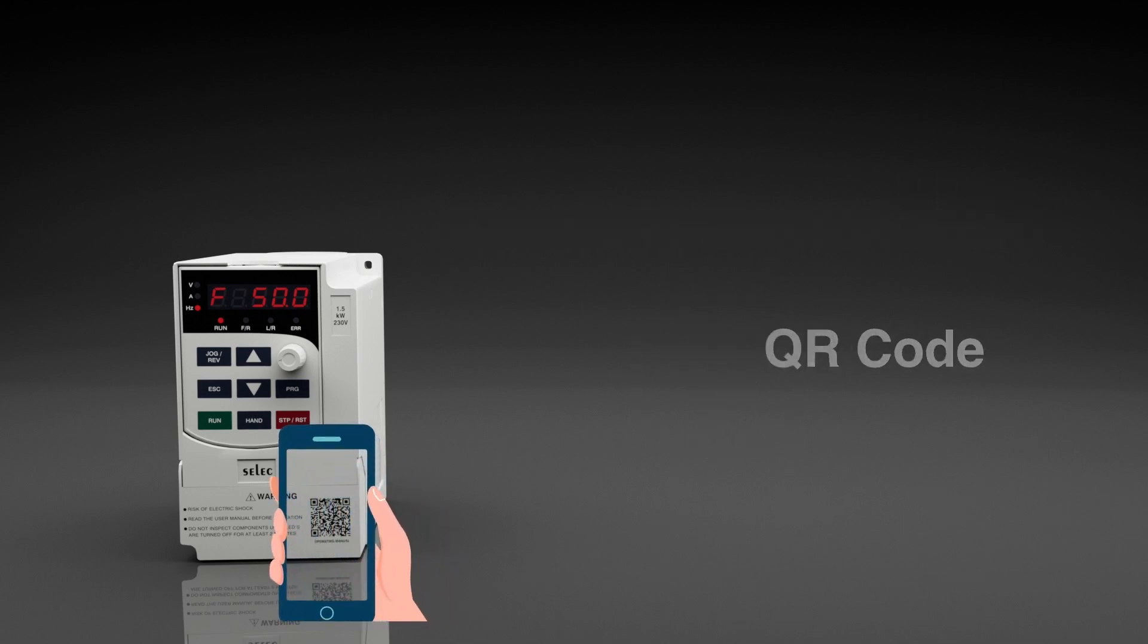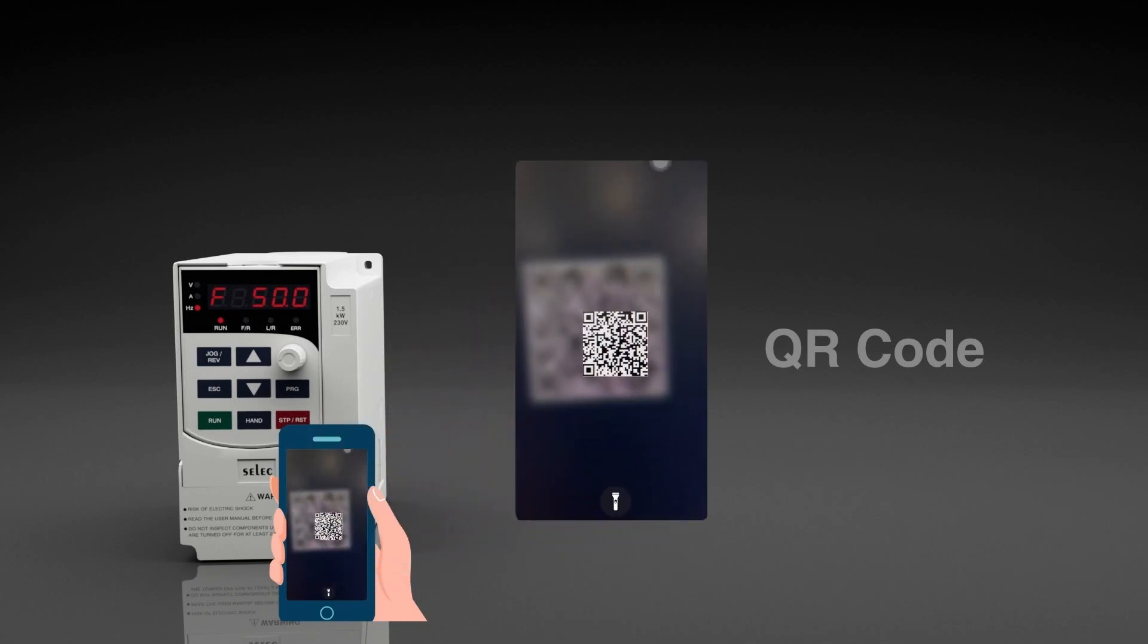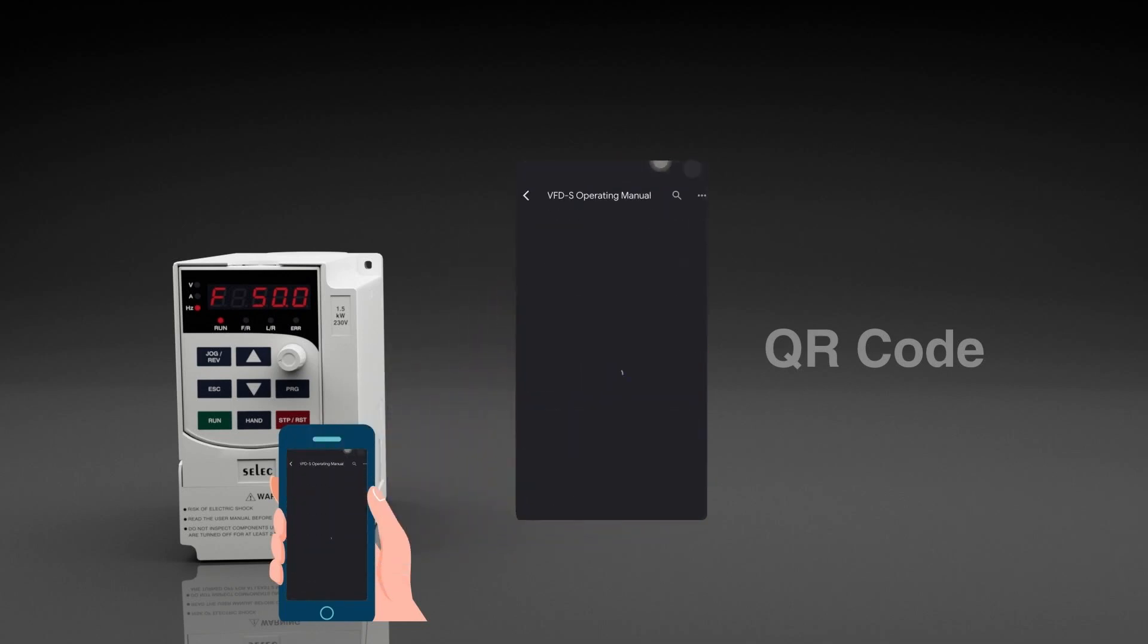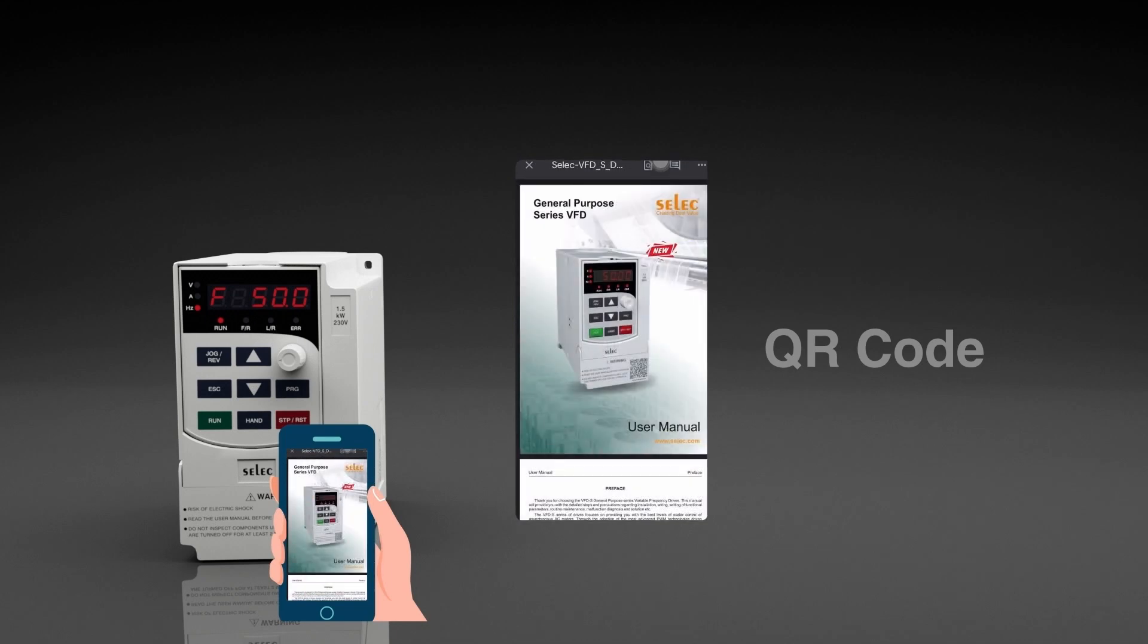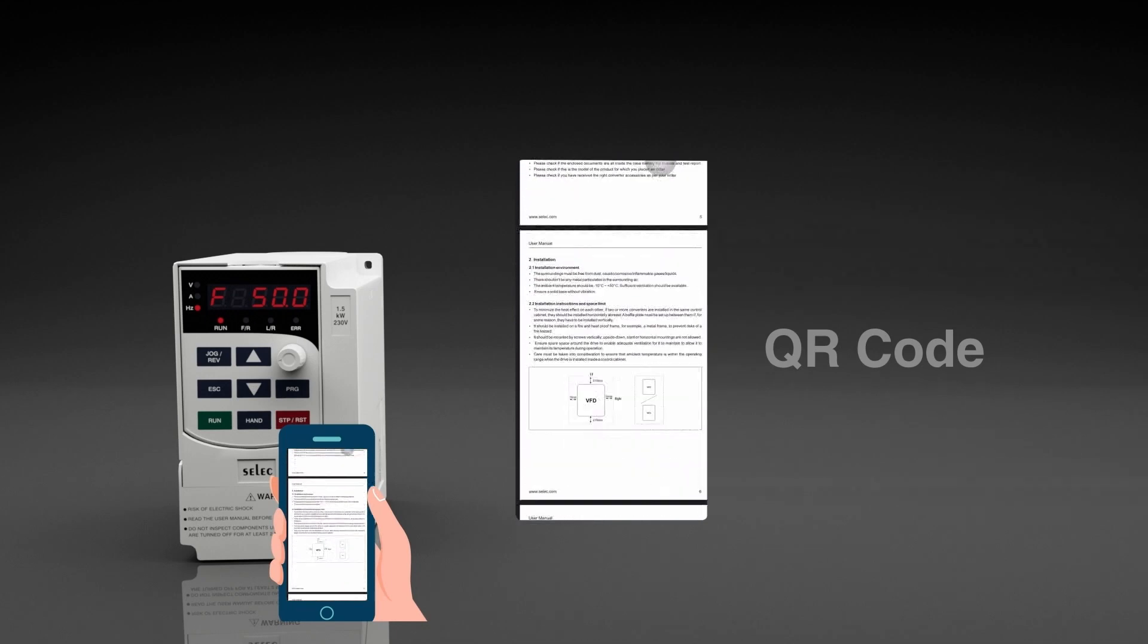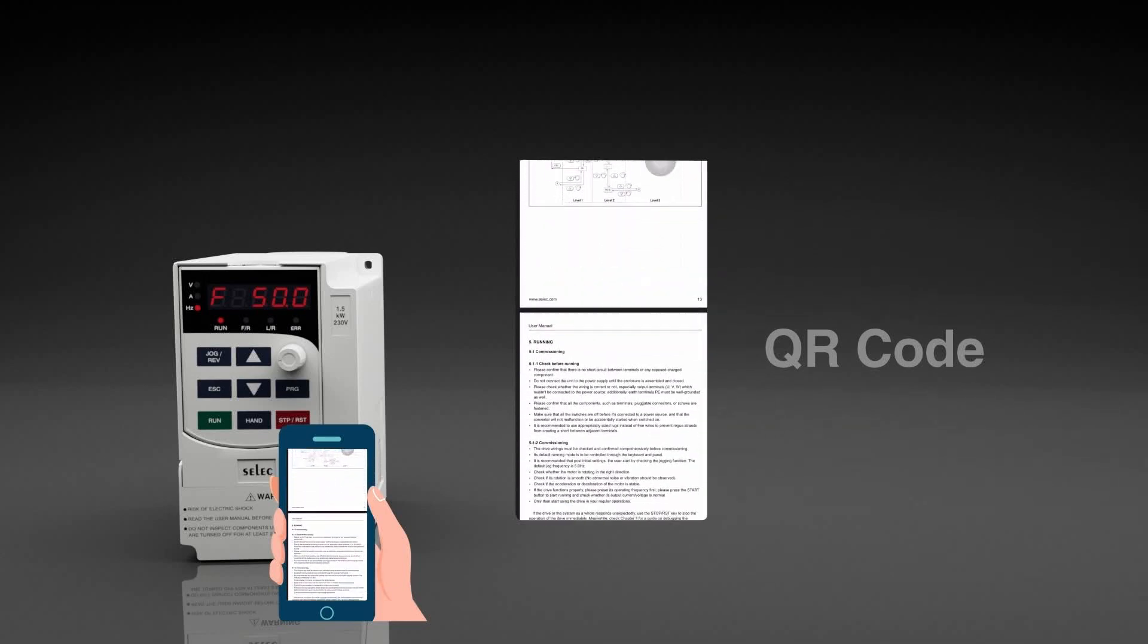Every VFD-S comes with a laser-etched QR code on the front, which brings the operating manual and other supporting documents conveniently to your fingertips. No longer do you need to store and retain the large multi-page operating manuals.